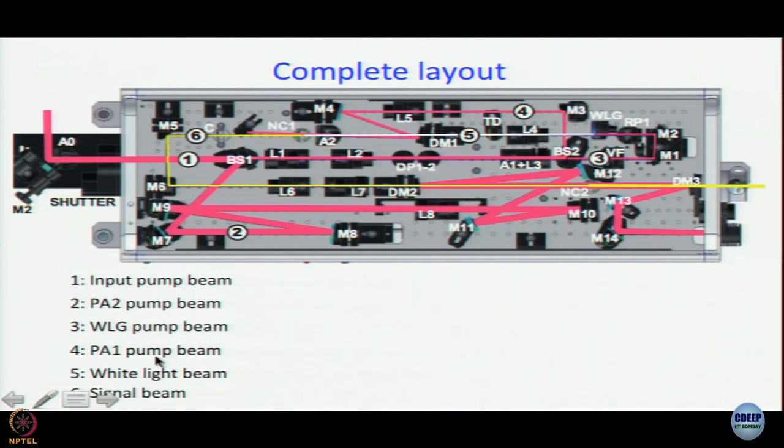So this path 3 is for white light generation pump beam. Fourth one is PA1 pump beam. You generate white light here. You see WLG written in white and you see this beam. That white beam number 5 is the white light beam.